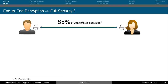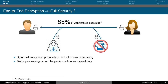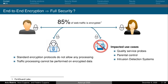End-to-end encryption is becoming increasingly widespread on computer and smartphone devices and applications. It ensures the privacy of involved parties, as well as the confidentiality of their data. However, the standard encryption techniques used to implement end-to-end encryption, like TLS, do not allow any processing of the encrypted data, which impacts several use cases. For example, end-to-end encryption makes it not possible to enforce parental control rules or to perform intrusion detection.